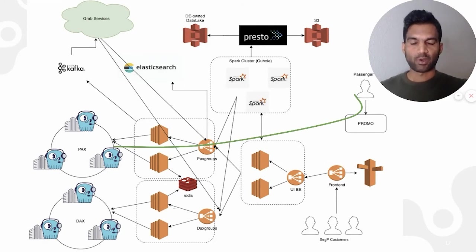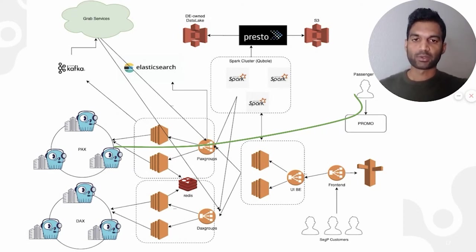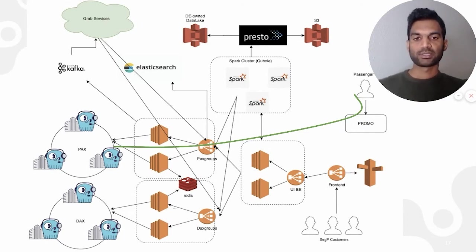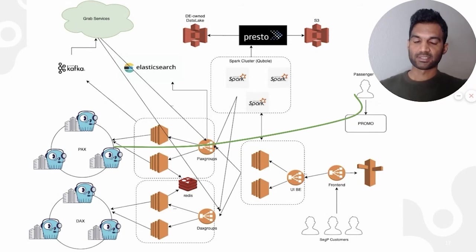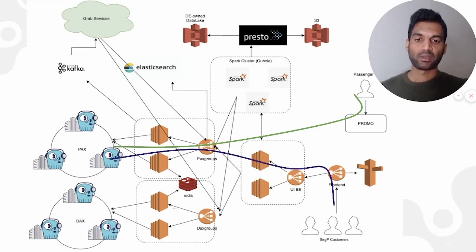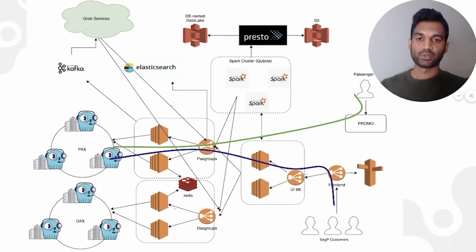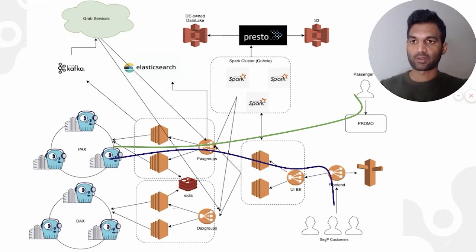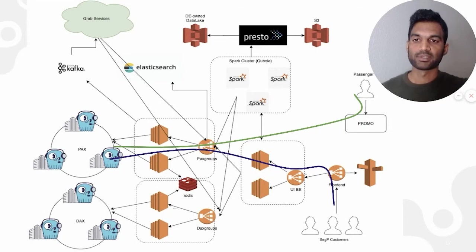For example, when a passenger wants to book a ride using a promotion: the user logs into the app, updates their location, and applies the promotion. In the background, a call is triggered to our service which does an eligibility check to make sure the right passenger is applying the promotion — and this service uses ScyllaDB as the source of truth. Internal customers also use the interface to create or schedule jobs, which get processed by Spark and written to ScyllaDB. Many other Grab services directly talk to our service for these use cases.